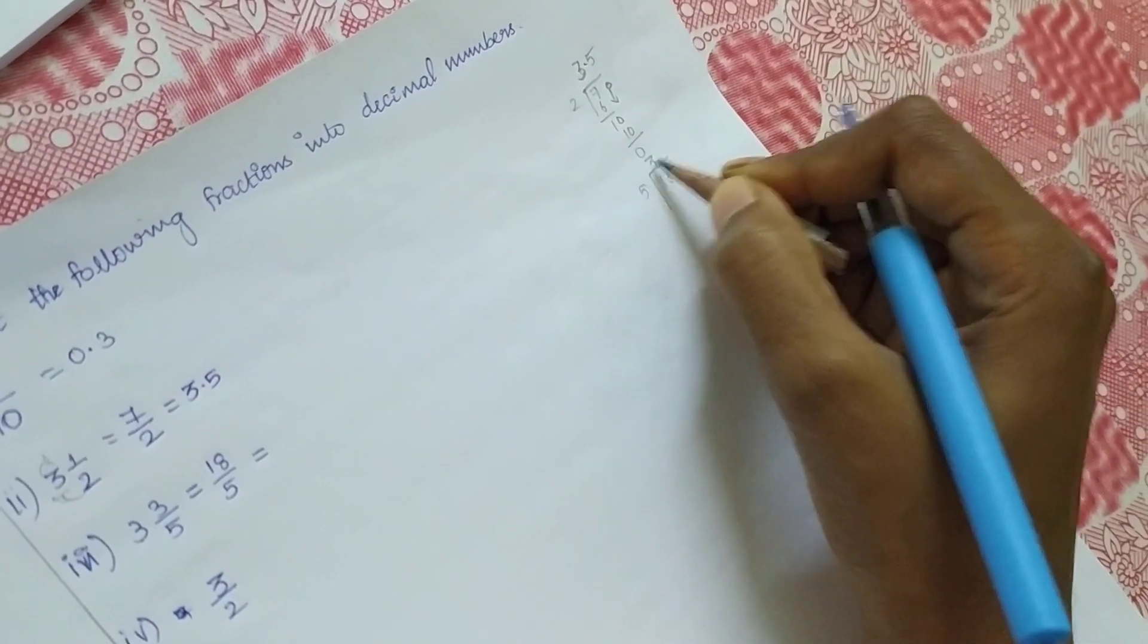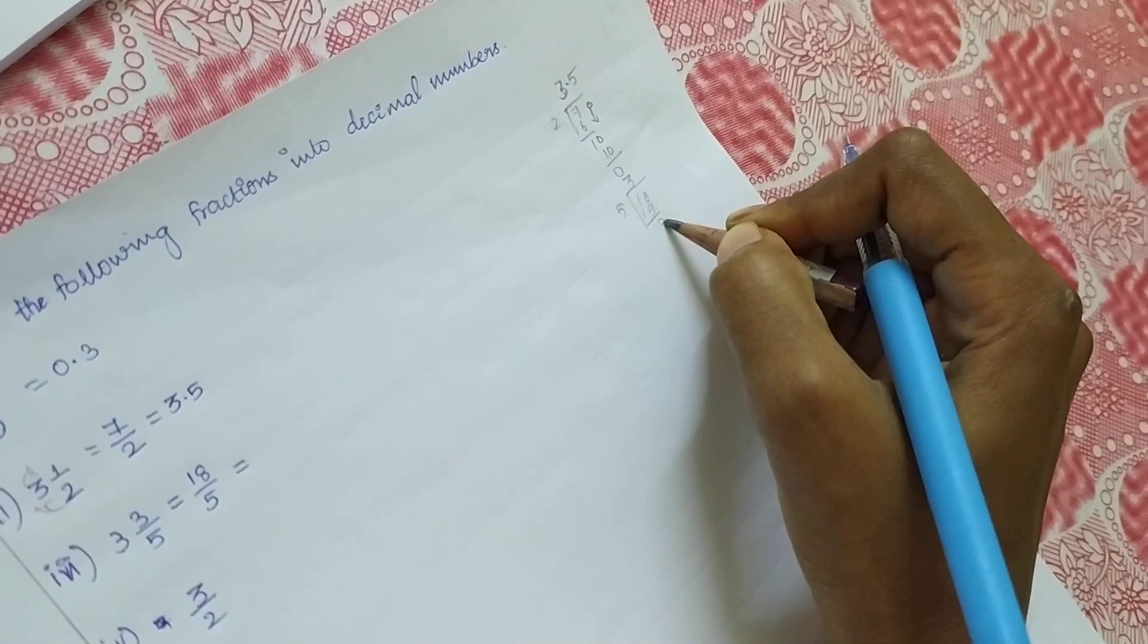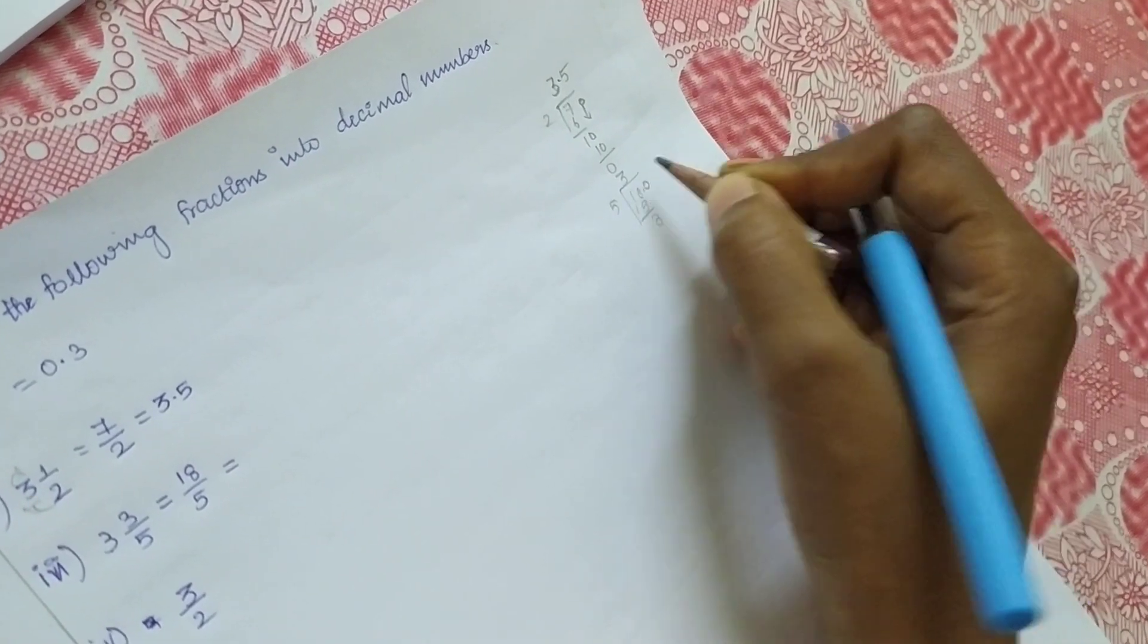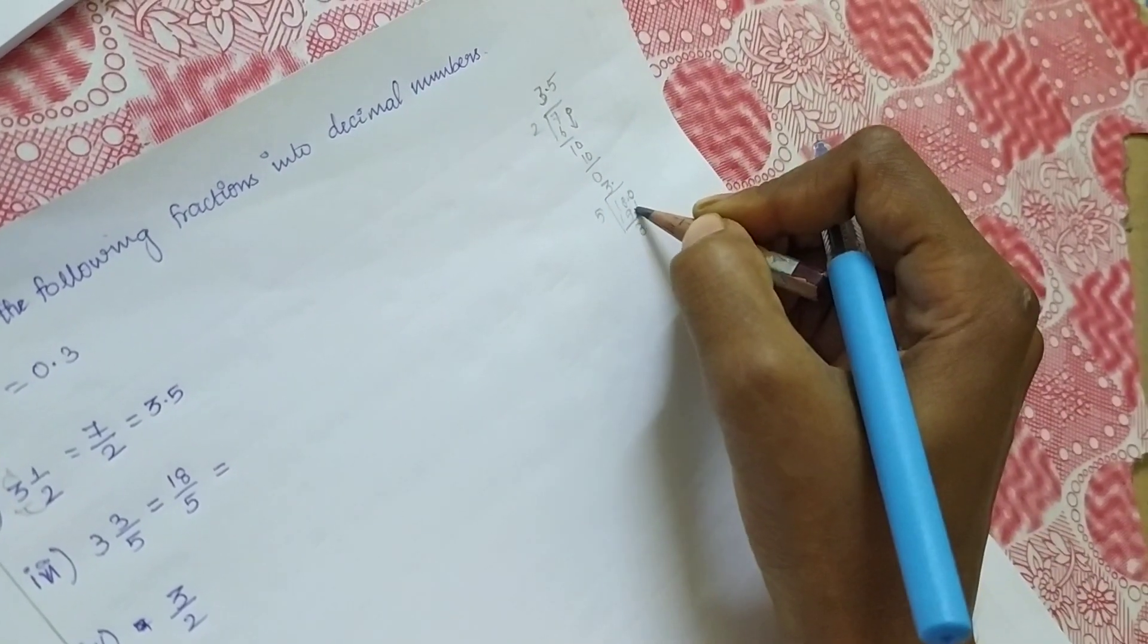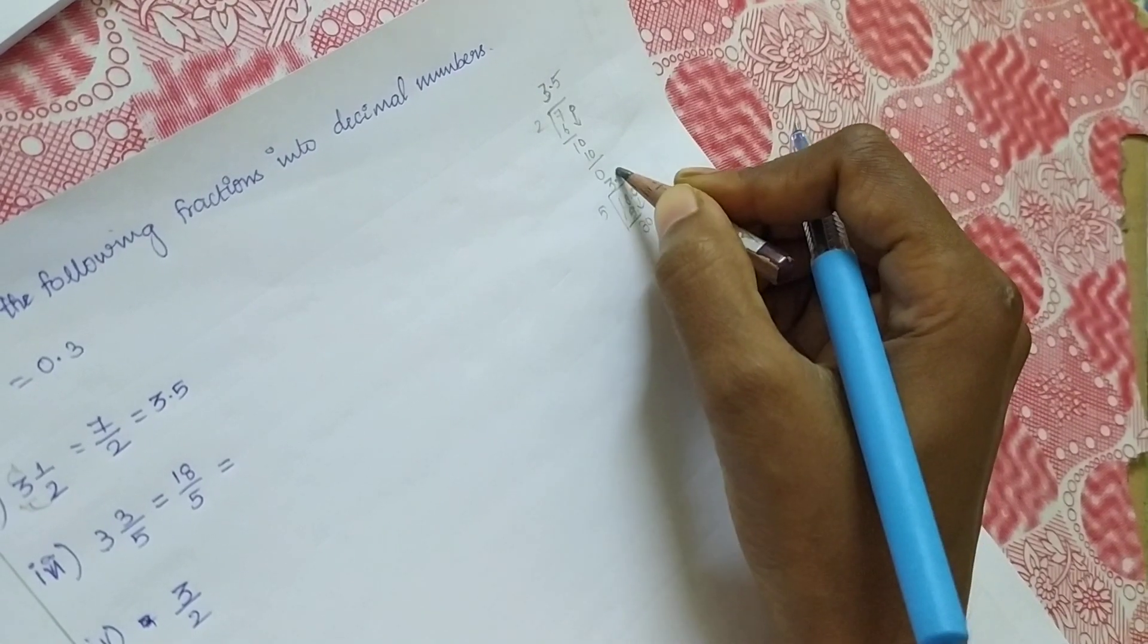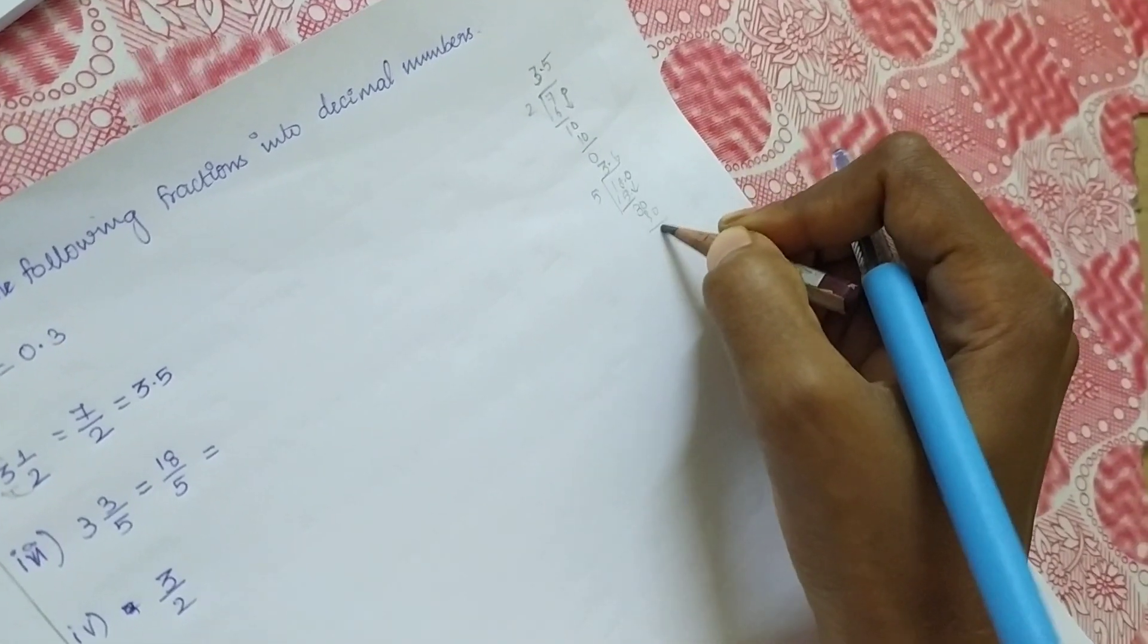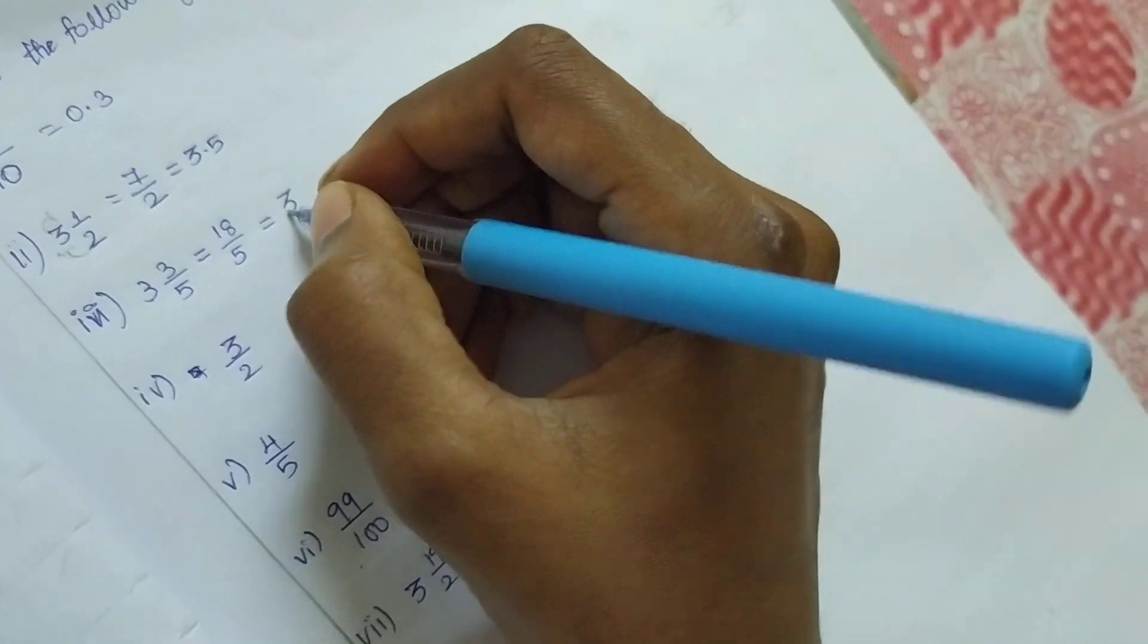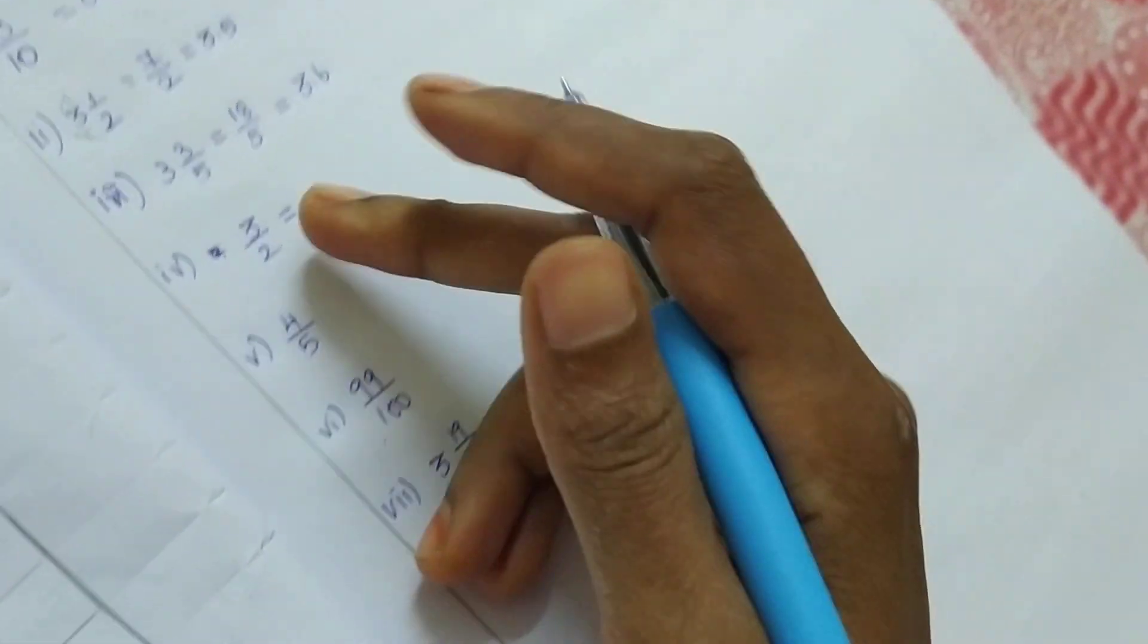How many times? 3 times 5 = 15. Subtracting, we get 3. Put a point, then 30. In the 5 table, 6 times is 30, then 0. So we're getting 3.6.